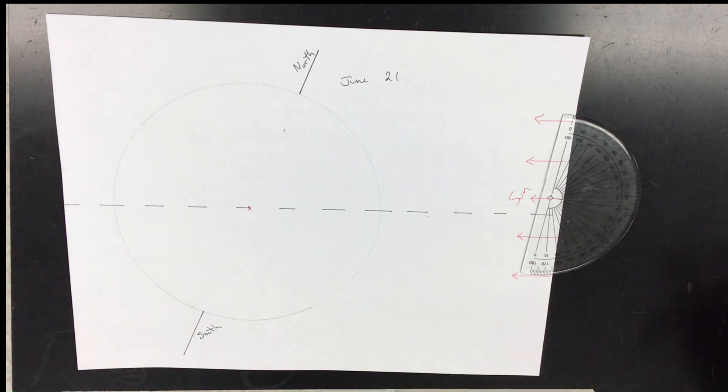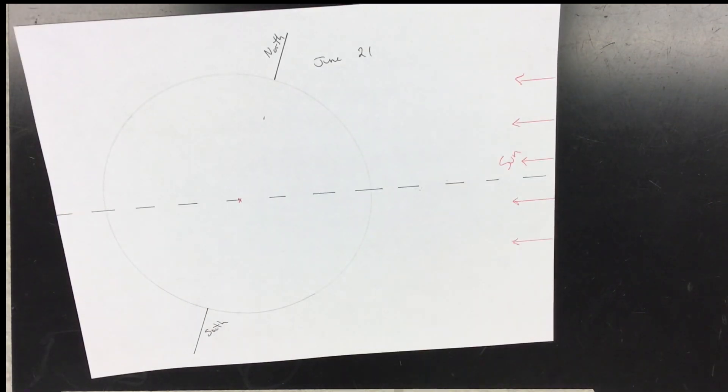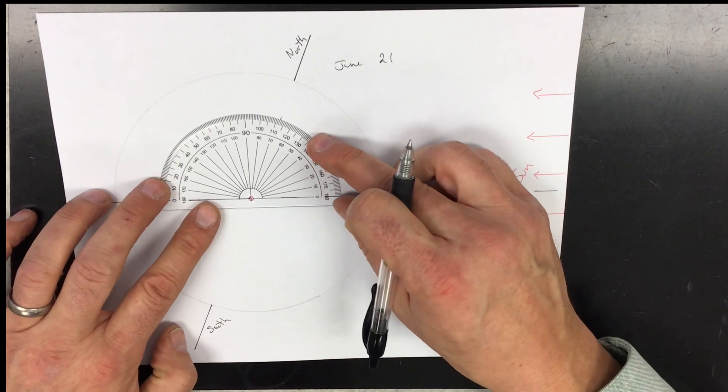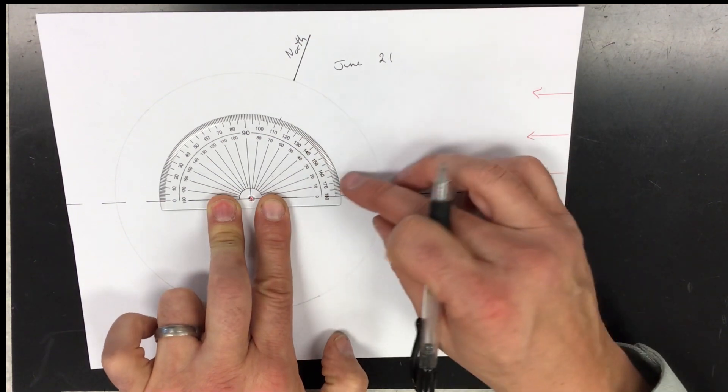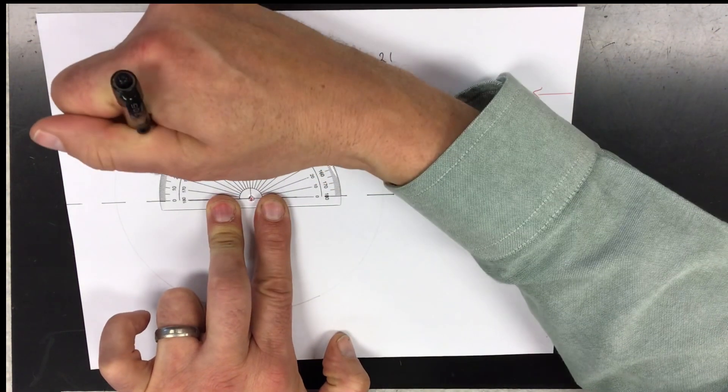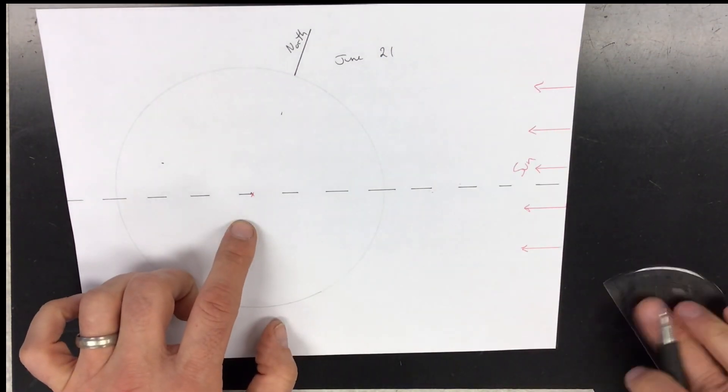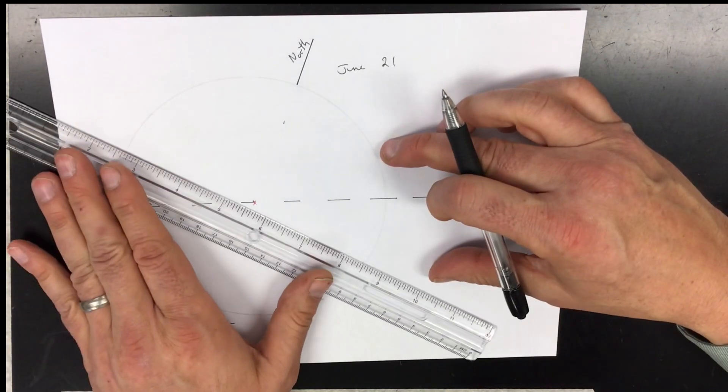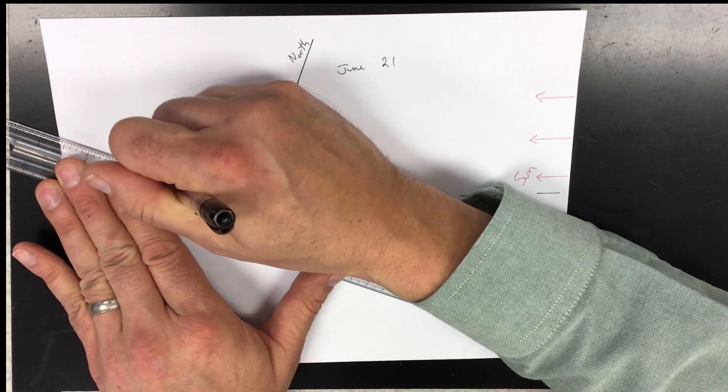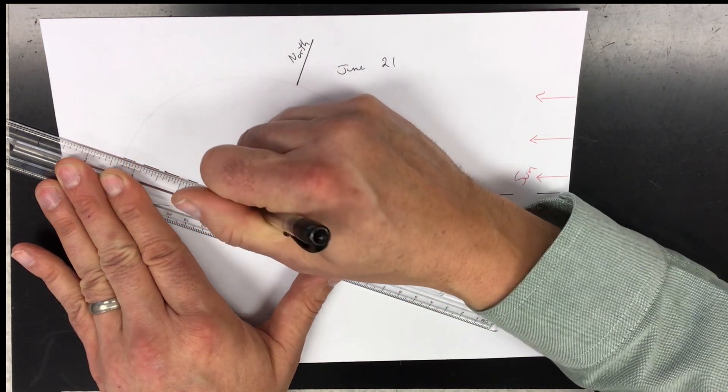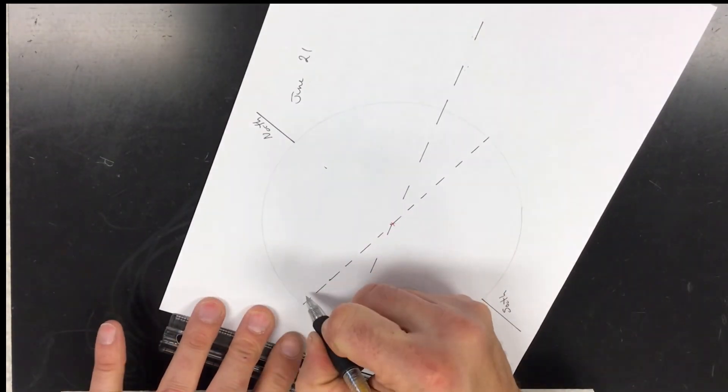Perpendicular to that would be the equator, right through the center again. Tilted 23 and a half degrees from perpendicular from the ecliptic. So 10, 20, 23 and a half degrees looks like right about there. From the center again, I'm going to draw my equator, dotted line across the page. Notice that the ecliptic goes across the entire page, but the equator only goes across the object.